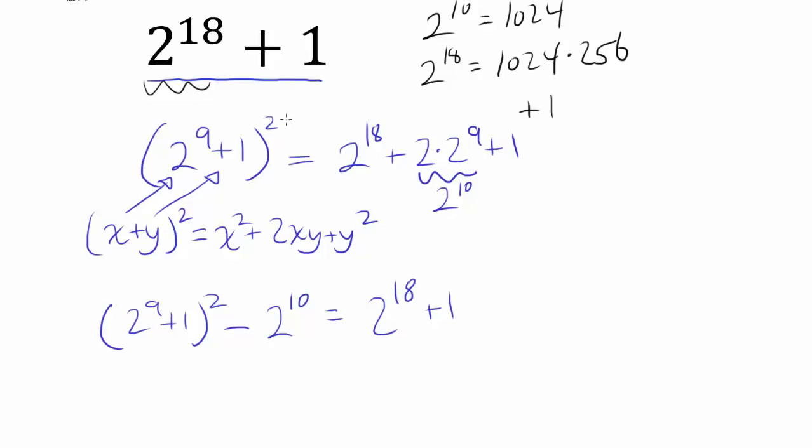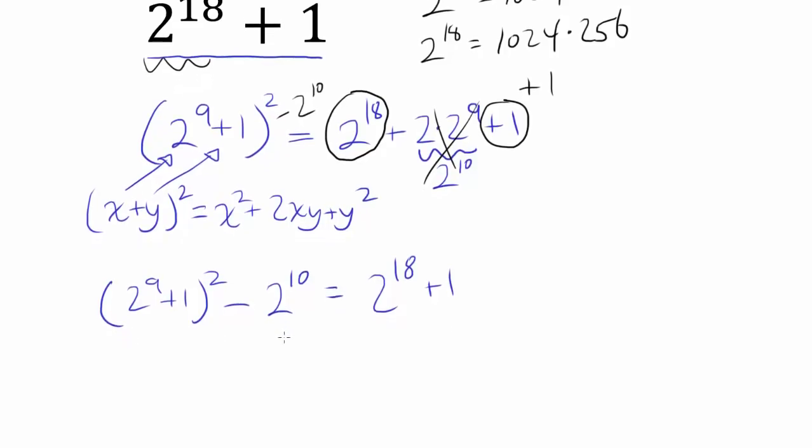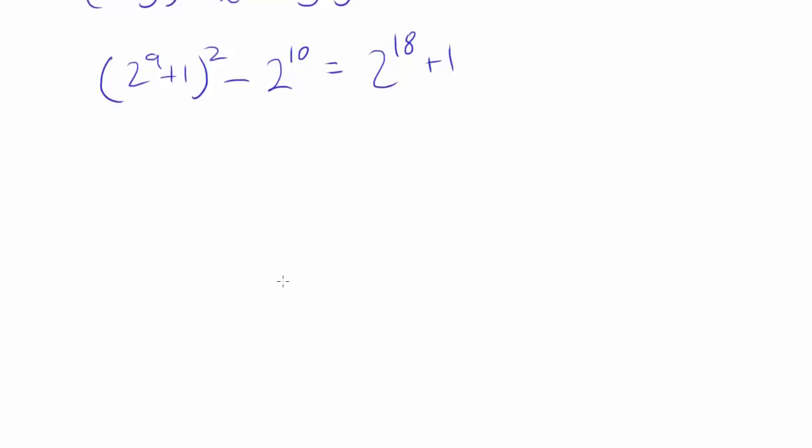If you're saying, what? Well, you have 2 to the 9th plus 1 squared being equal to 2 to the 18th plus 2 to the 10th plus 1. So if you subtract 2 to the 10th from both sides, you should get 2 to the 18th plus 1 is 2 to the 9th plus 1 squared minus 2 to the 10th. So we have this expression being equal to our original expression.